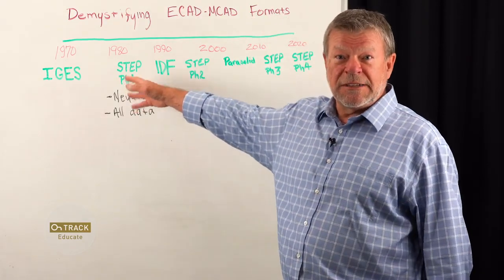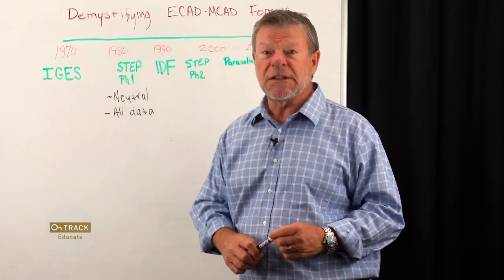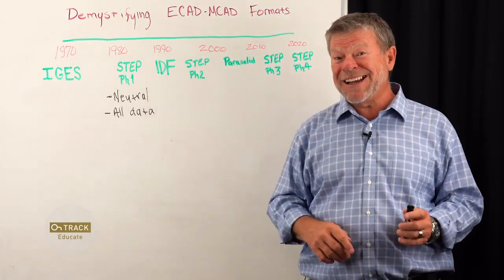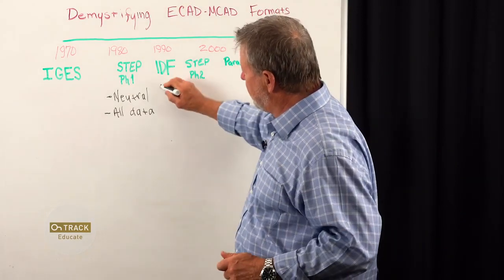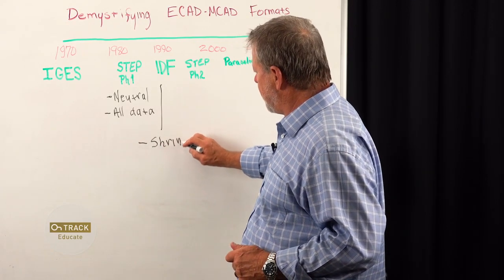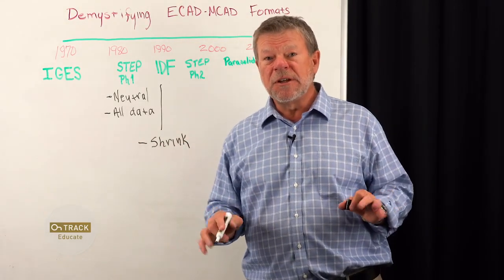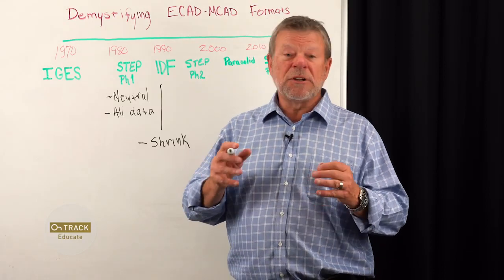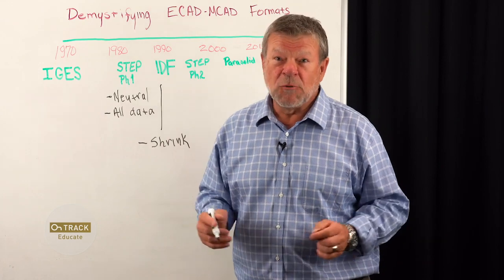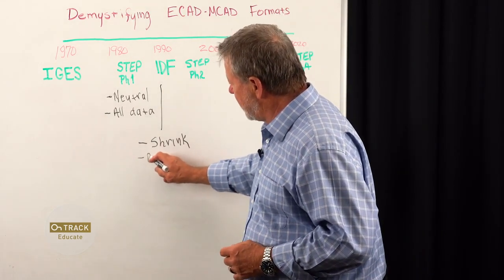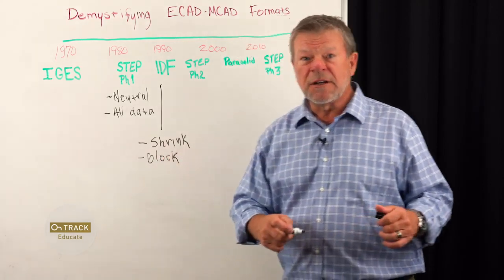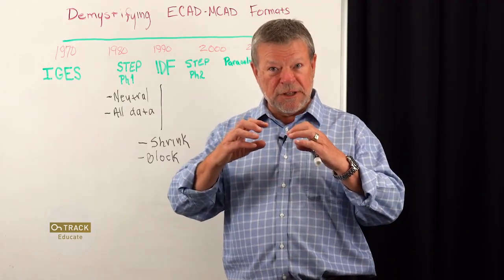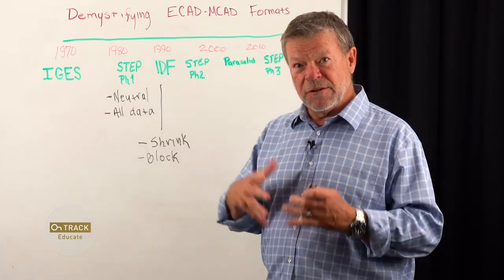From the 1980s into the future, systems continued to get bigger and more complex. One company in the early 90s came out with a different format called IDF, Intermediate Data Format. The primary reason for IDF was to shrink files, and they did this by doing all of their 3D representations as blocks with no detail. You could see where parts were and how tall they were, but you couldn't tell what kind of part it was — it was just a block. The weakness is that models are just blocks on a printed circuit board: great for transferring files fast and checking roughly if everything fits, but weak in 3D model representation.